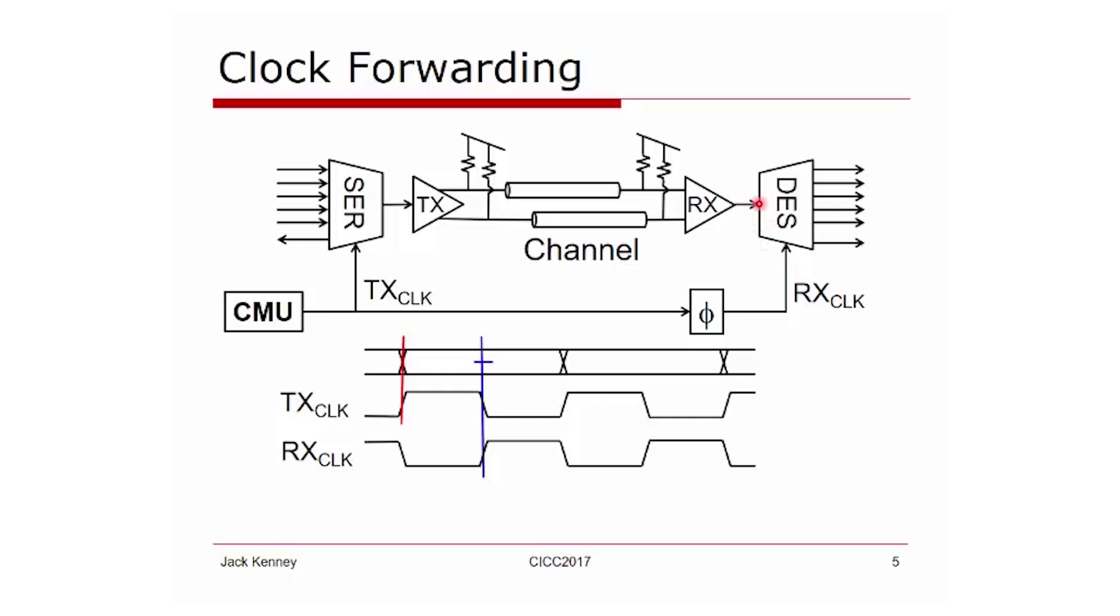Internally, you can think there's a flip-flop here. The transmit launches data on the rising edge of the transmit clock and the flip-flop within the deserializer samples on its rising edge. What you want to do is have this nominally positioned in the center of the eye so you'll have equal setup and hold times.